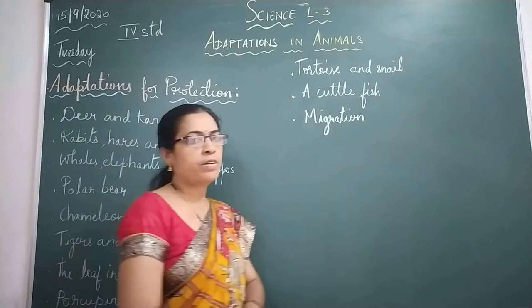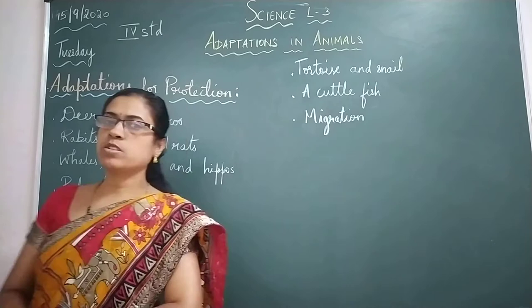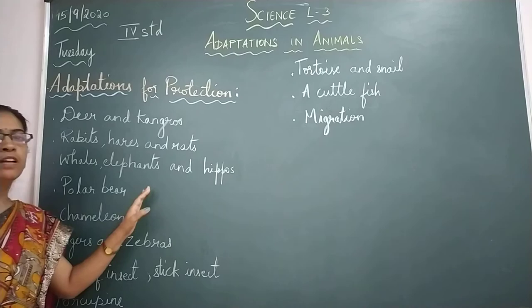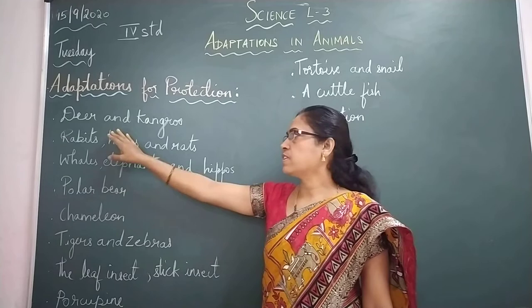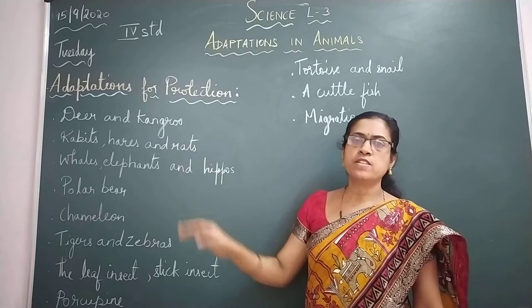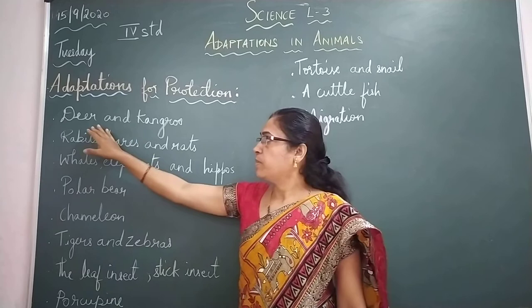Every animal needs to be protected from its enemies and surroundings. These animals develop various ways to protect themselves. Let us learn about how different animals protect themselves from enemies and surroundings. Starting with deer and kangaroos — these animals escape from their enemies because of their speed and swiftness.